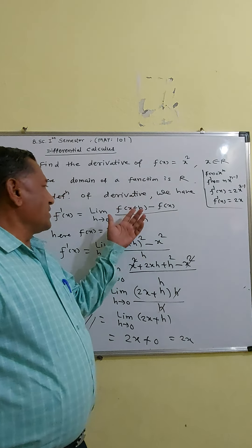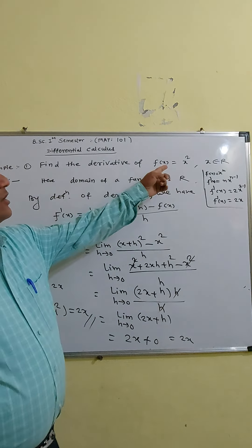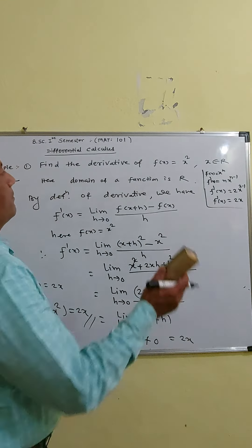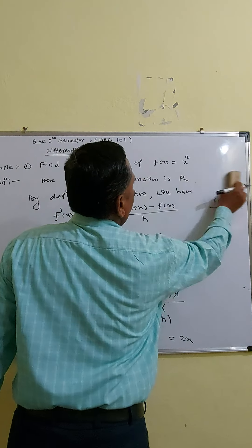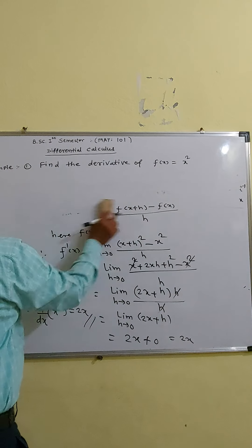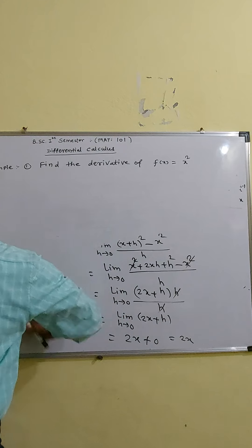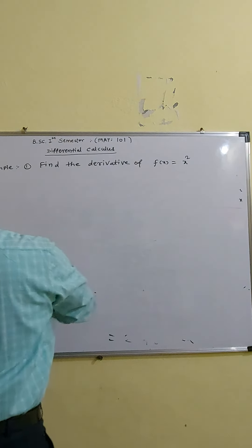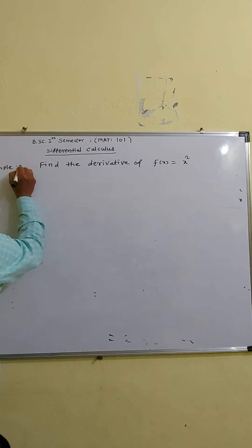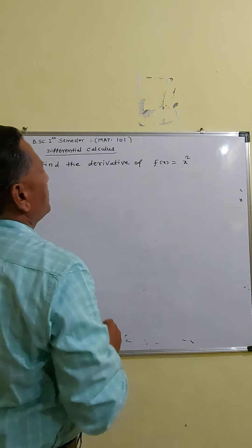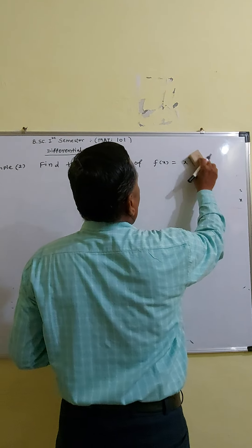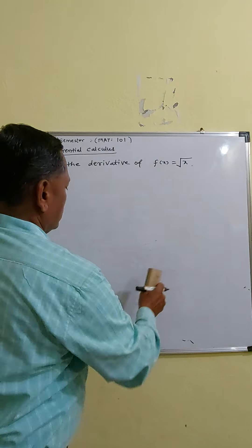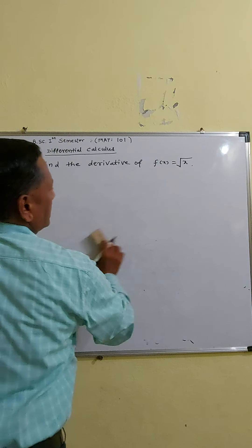In this way, by using the first principle of derivative, you find the derivative of a given function. Again, we see one more example. Example two: Find the derivative of the function F(x) = √x.